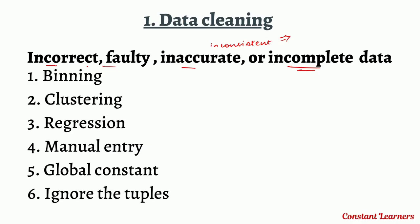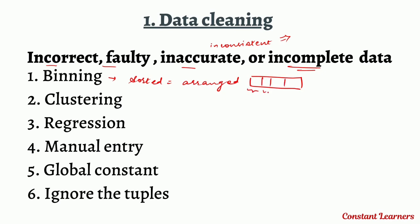There are five ways of cleaning the data. First is binning — the data is sorted, meaning arranged in a particular format, either location-wise, year-wise, or date-wise. After sorting, the data is split into segments and handled separately. If the data in a segment is incomplete or inaccurate, the values of that entire segment will be replaced by the mean or average value of all data values in that particular set.